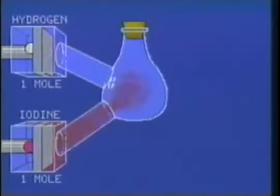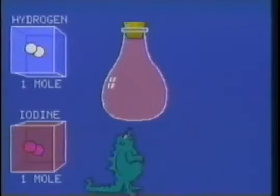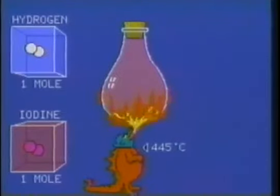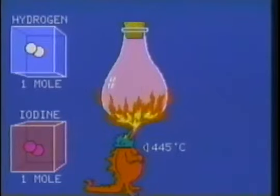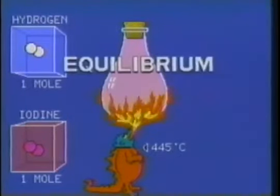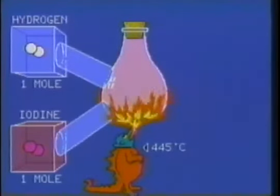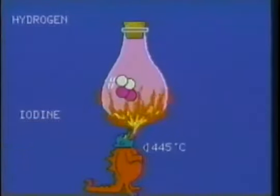If this is so, we need a model that explains how the individual molecules are behaving. Let's combine one mole of colorless hydrogen gas and one mole of purple iodine gas in a one-liter flask and heat it to 445 degrees Celsius. The purple color begins to fade, indicating that iodine is being consumed. Eventually the gas becomes almost colorless and remains so. Balancing the equation, we would expect the reaction to produce two moles of hydrogen iodide.